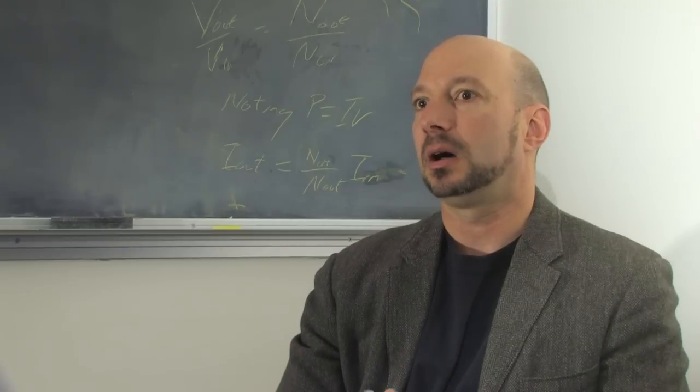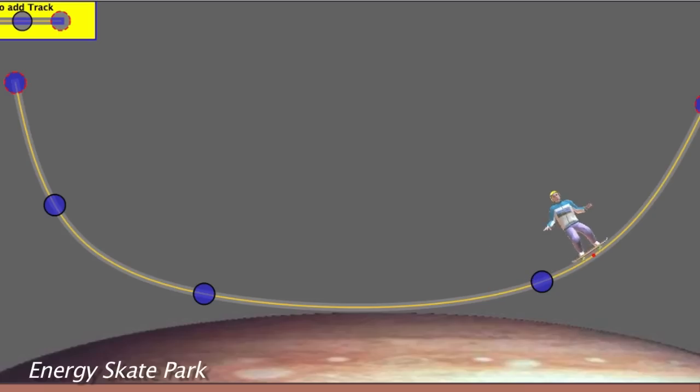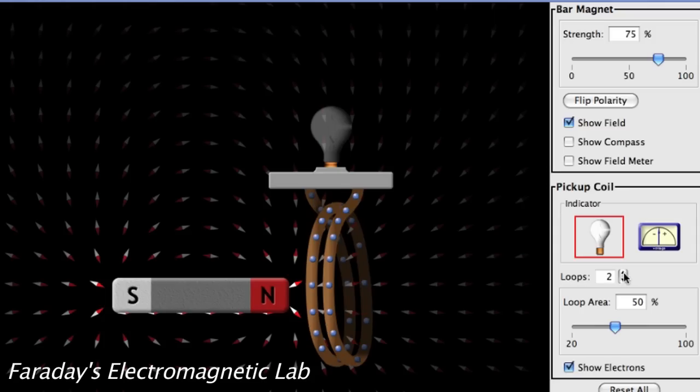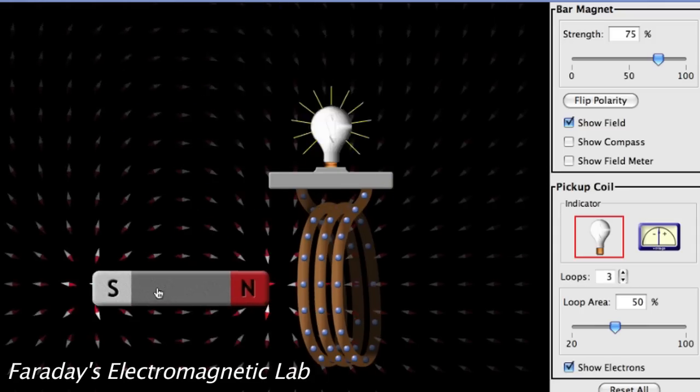We can provide instantaneous feedback to students on what the impact is if we change planets or gravitational fields or time or the number of coils on a wire and see immediately what the impact of these are. And that is a really powerful way to learn.